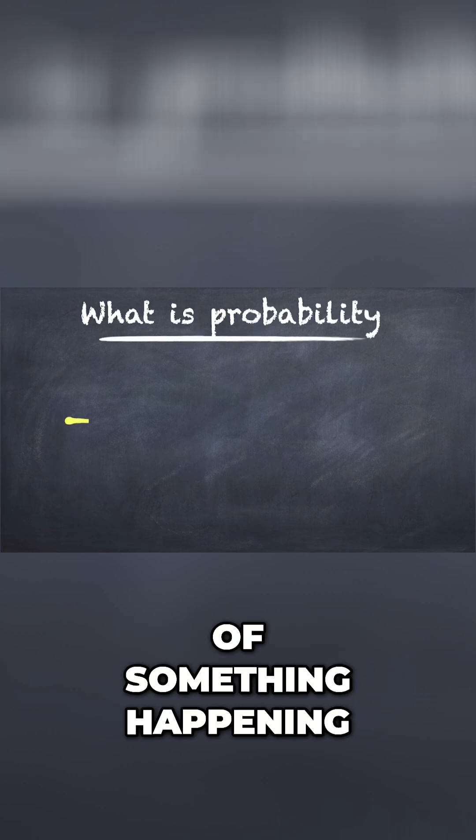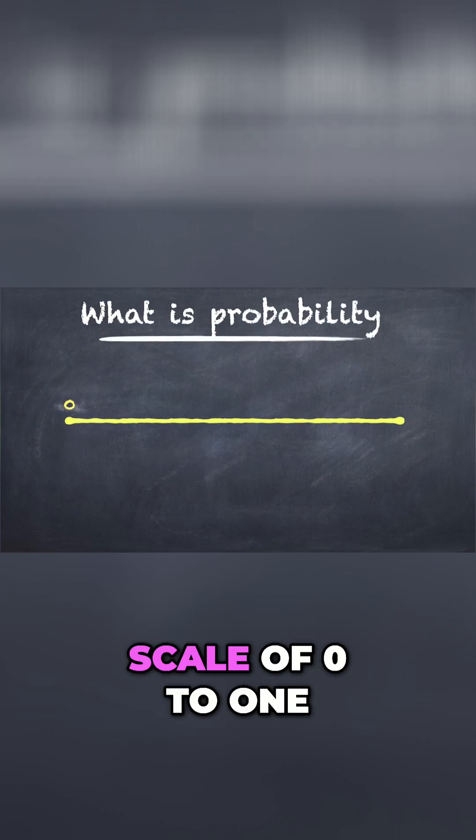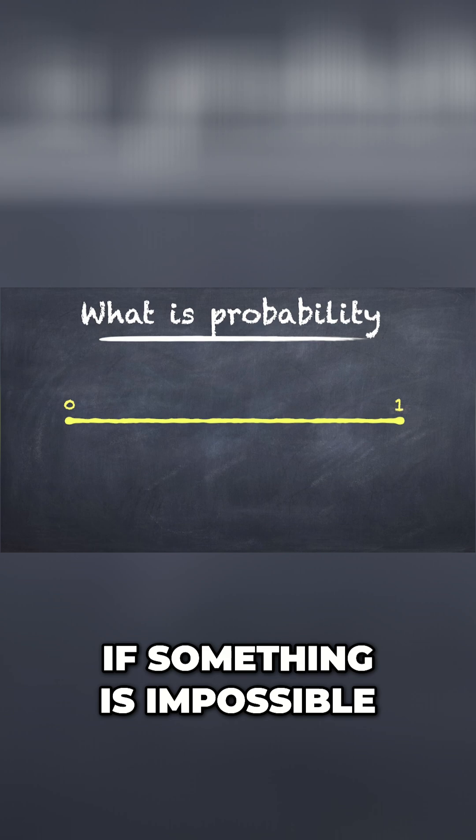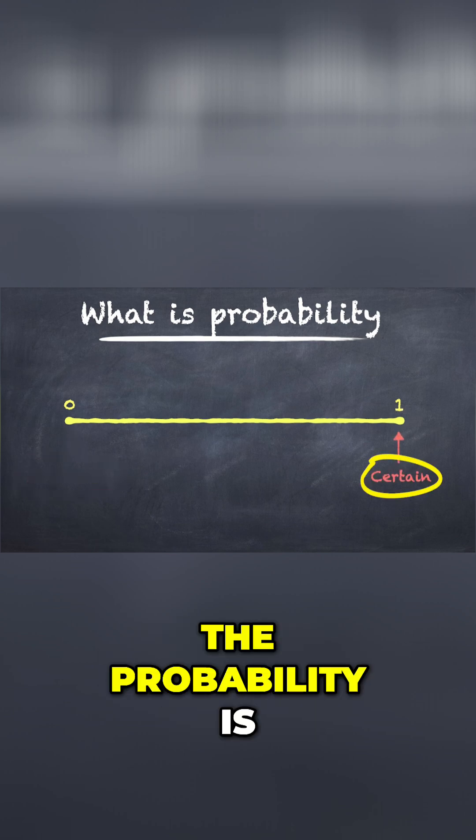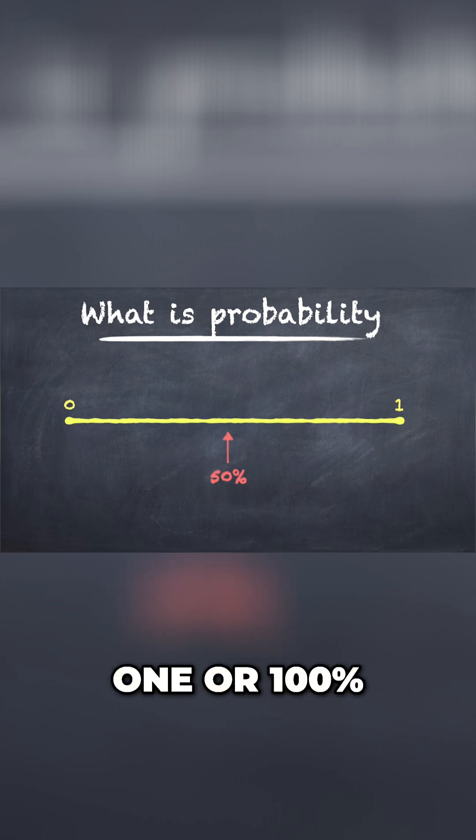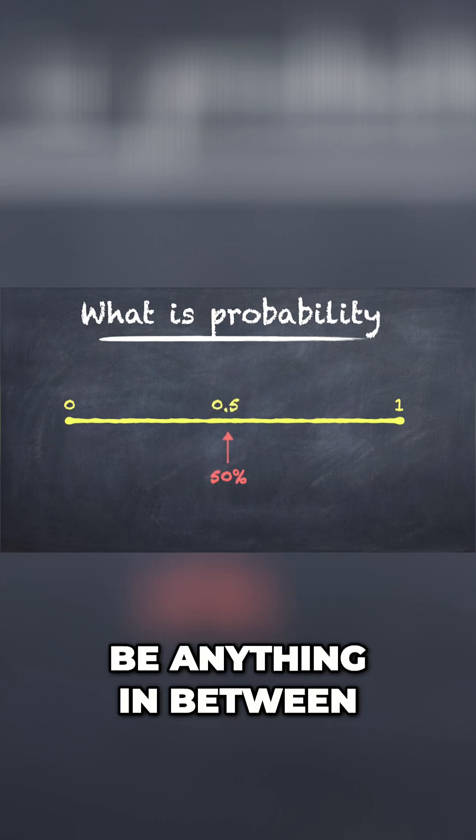Probability is the likelihood of something happening, and we usually think of it on a scale of 0 to 1. If something is impossible, then the probability is 0, and if it is absolutely certain, then the probability is 1 or 100%. The probability can be anything in between.